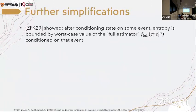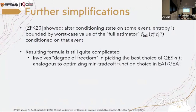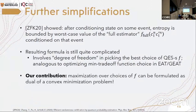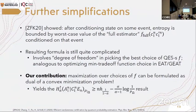Now let's look at some further simplification of this. The Zhang et al showed that after conditioning the state on some event, the entropy is bounded by the worst case value of the full estimator condition on that particular event. But this is not easy actually resolved because it still has some complication in the sense that you still have the degree of freedom of choosing the best QEF. And then this is the same hardness as to picking up the best min trade-off function in the entropy accumulation. So what we did, we showed that the maximization over the choice of these estimators can be formulated as a dual to a convex optimization, which after you solving this, you will get the results that I showed you a little bit earlier.